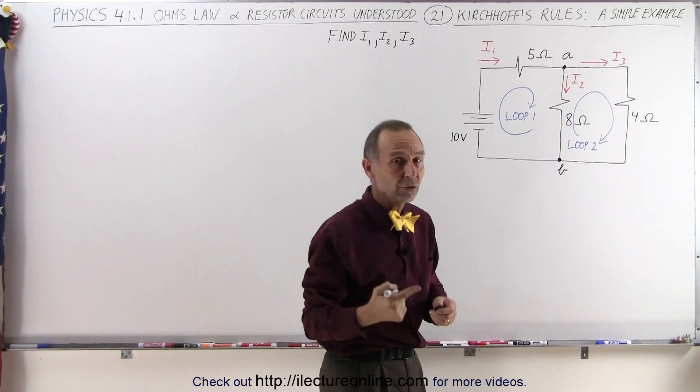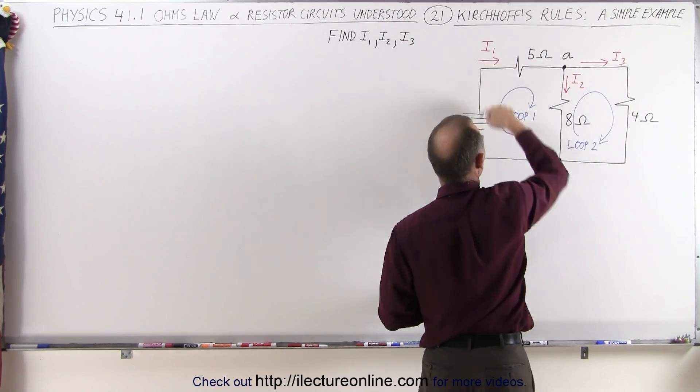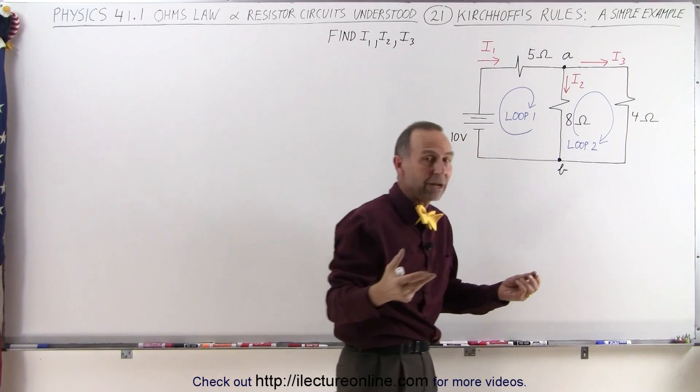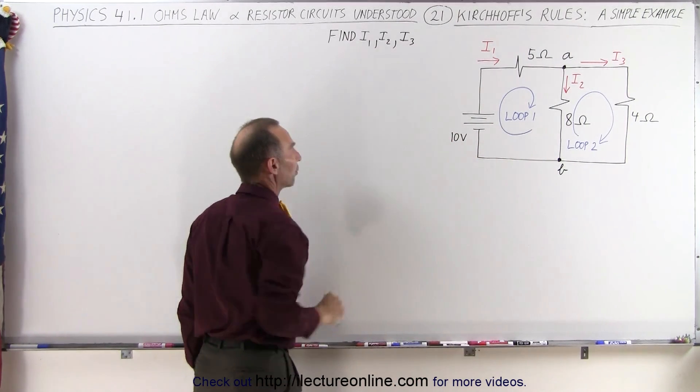Notice there are three different ways in which you can go from A to B. You can go this way, you can go this way, and you can go this way, which means there are three branches and therefore three currents, and we're trying to find what those three currents are.